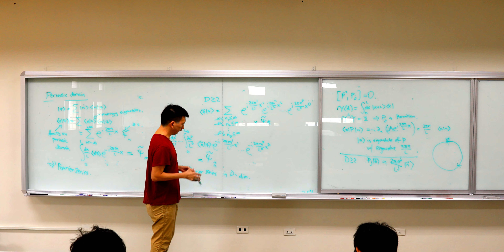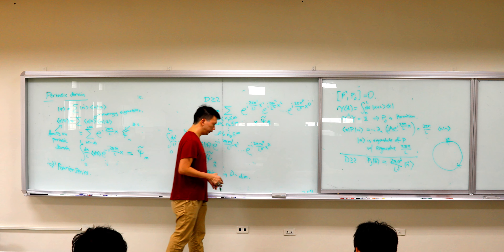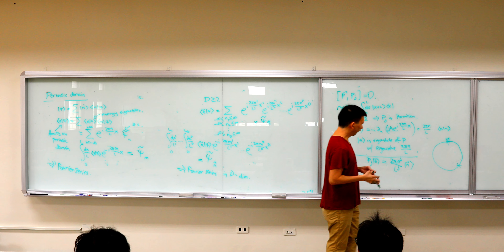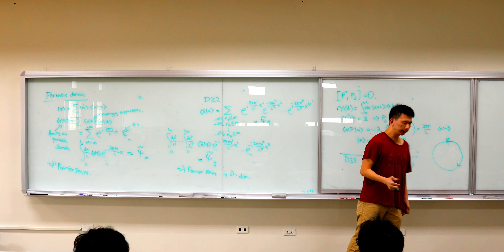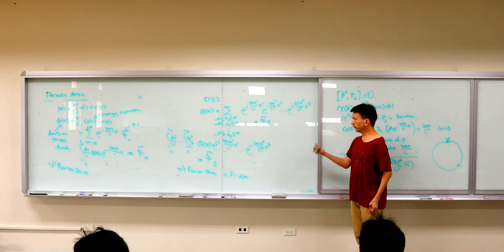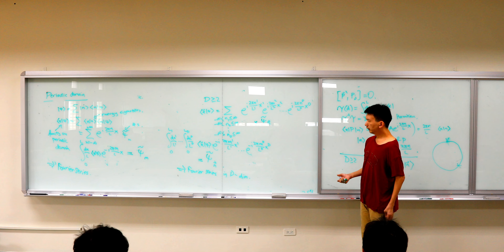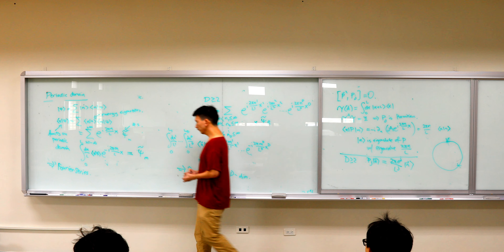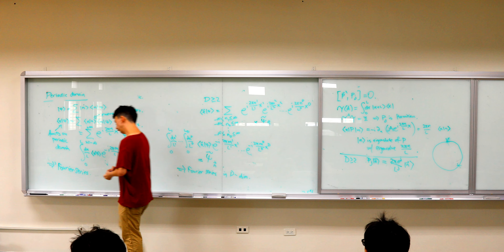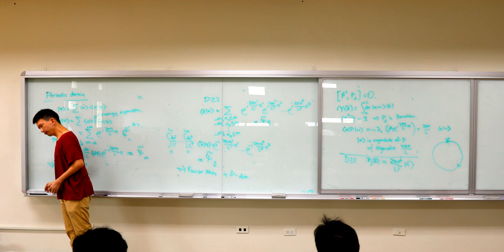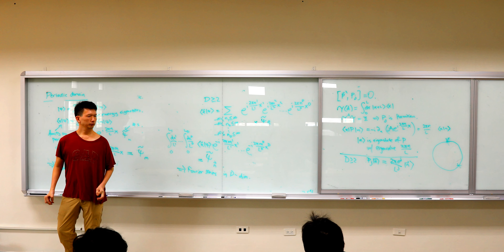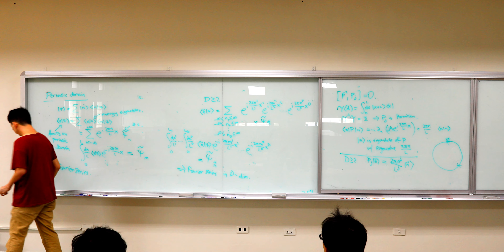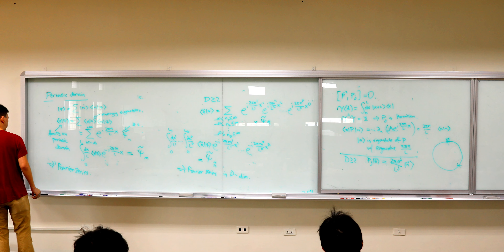Once you have a periodic boundary condition, you have a torus, so to speak. Then you will always be able to find that your functions on the torus admit this Fourier series. See you guys next week.